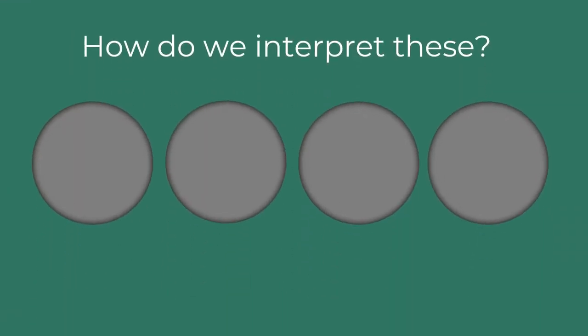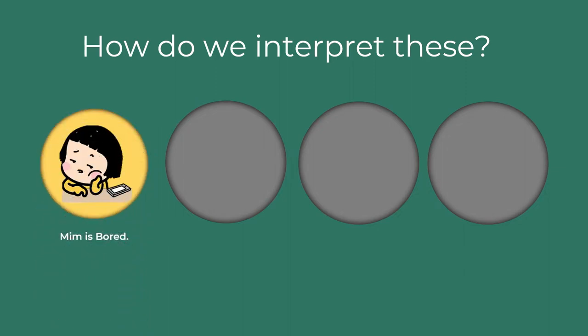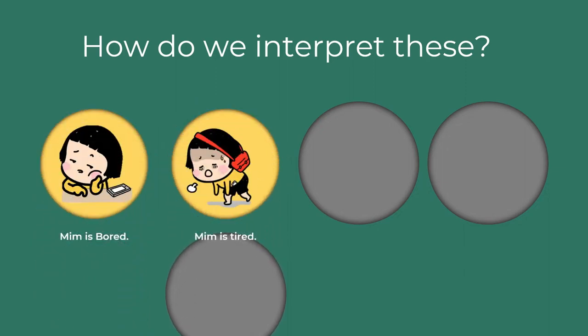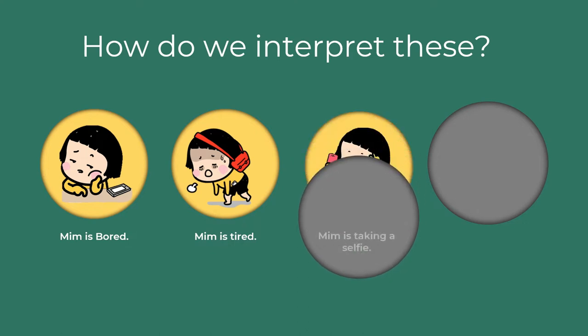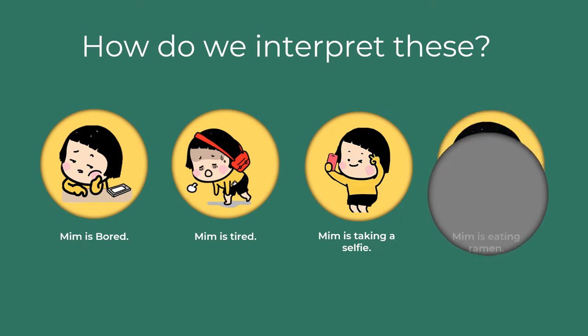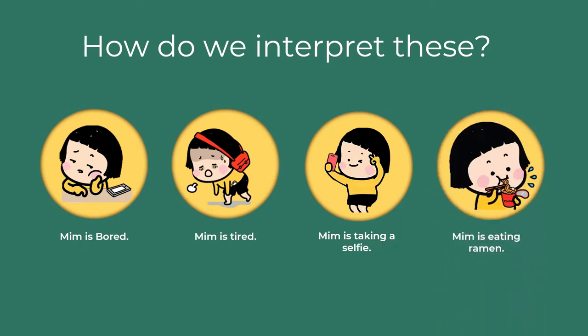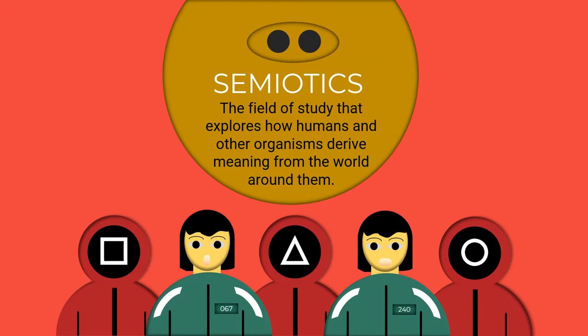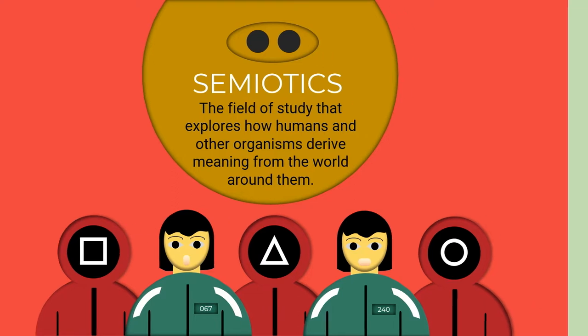How do we interpret this? Meme is born. Meme is tired. Meme is taking a selfie. Meme is eating ramen. But how do we know that? It is a job for semiotics, the field of study that explores how humans and other organisms derive meaning from the world around them.